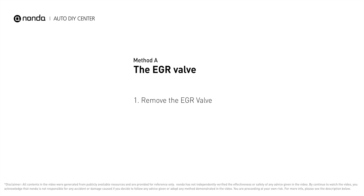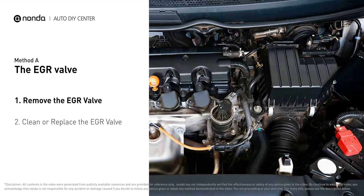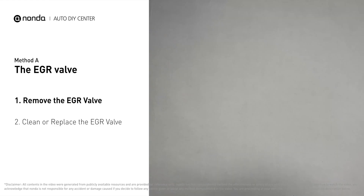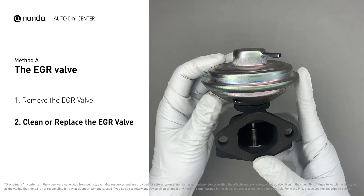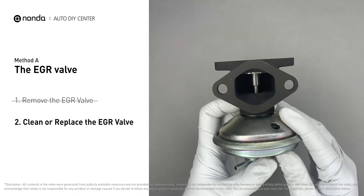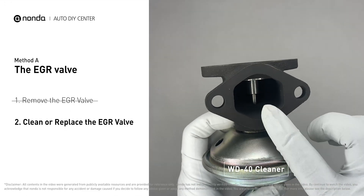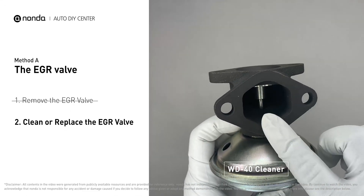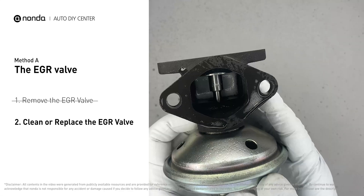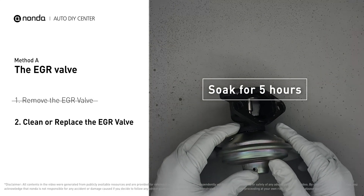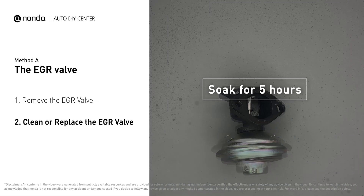Method A: the EGR valve. Looking at the engine from the front, the EGR valve is located towards the rear of the engine, just to the right side of the center. First, carefully remove the EGR valve from your car. Turn the EGR valve upside down, fill it up with WD-40 cleaner, and let it soak for five hours so the solvent can get rid of all the carbon buildup.